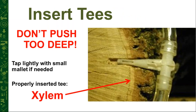Don't push the tees in too deep — the picture shows how the hole is drilled to about one inch below the bark, placing the small perforation on the side of the tee right into the xylem where the material will be taken up. Tap lightly with a mallet if needed.